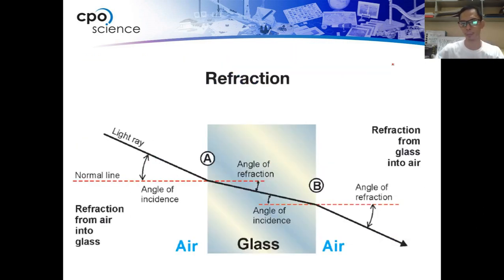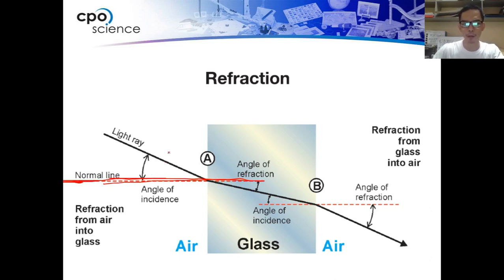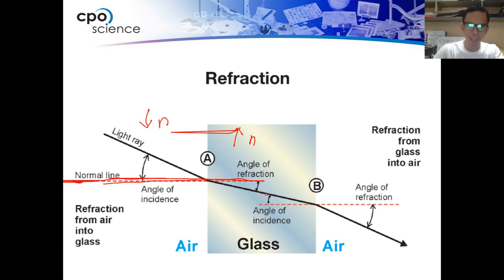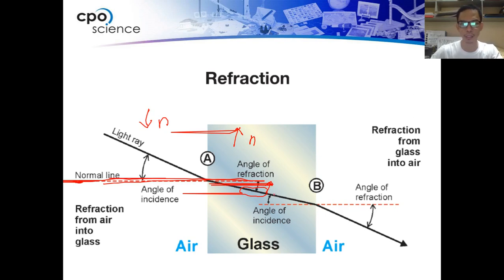What is this normal line? This is the normal line. When the light ray passes from air to glass, the glass has a higher index of refraction than air. What happens is the angle of refraction bends towards the normal line, meaning the angle of refraction is near the normal line.